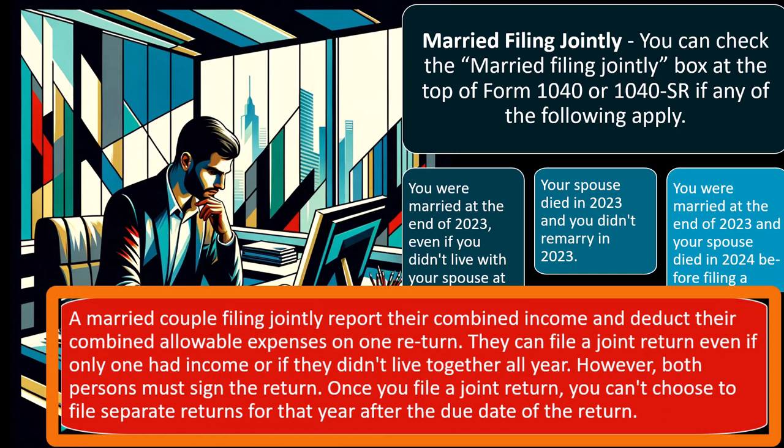If your spouse died in 2023 and you didn't remarry, you are still generally filing married filing jointly for that year, since the deceased spouse will still have had income during the year. A married couple filing jointly reports their combined income and deducts their combined allowable expenses on one return. The idea is that you are taxed as one entity, co-mingling finances, which is why the tax tables differ between single and married.